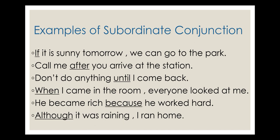Examples: 'If it is sunny tomorrow, you can go to the park' — here 'if' is the subordinating conjunction. 'Call me after you arrive at the station.' 'When I came into the room, everyone looked at me.' 'He became rich because he worked hard' — 'because' is the conjunction. In all these, one part is the principal clause and the other is the dependent clause.